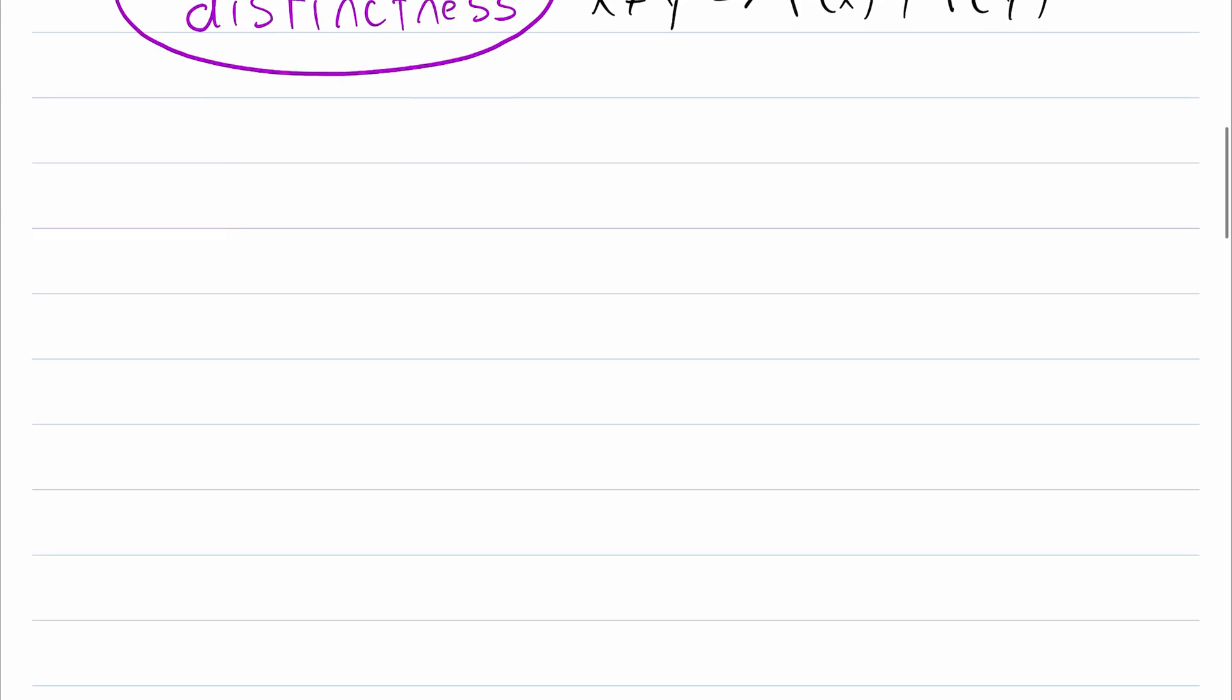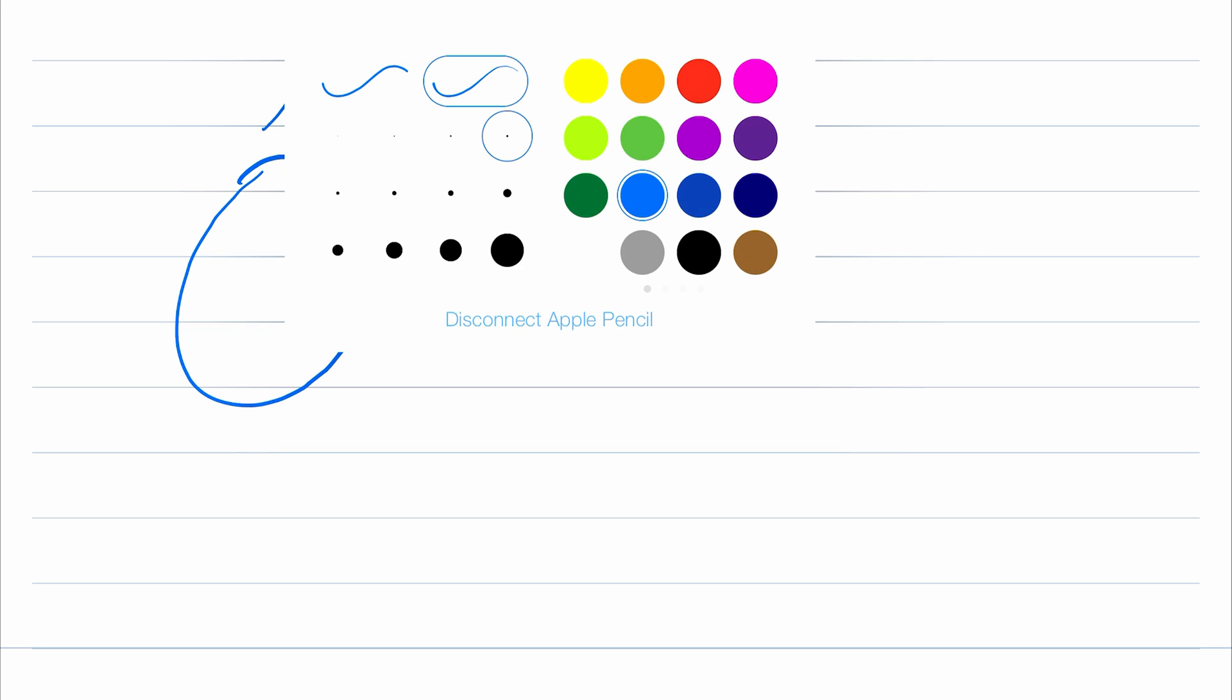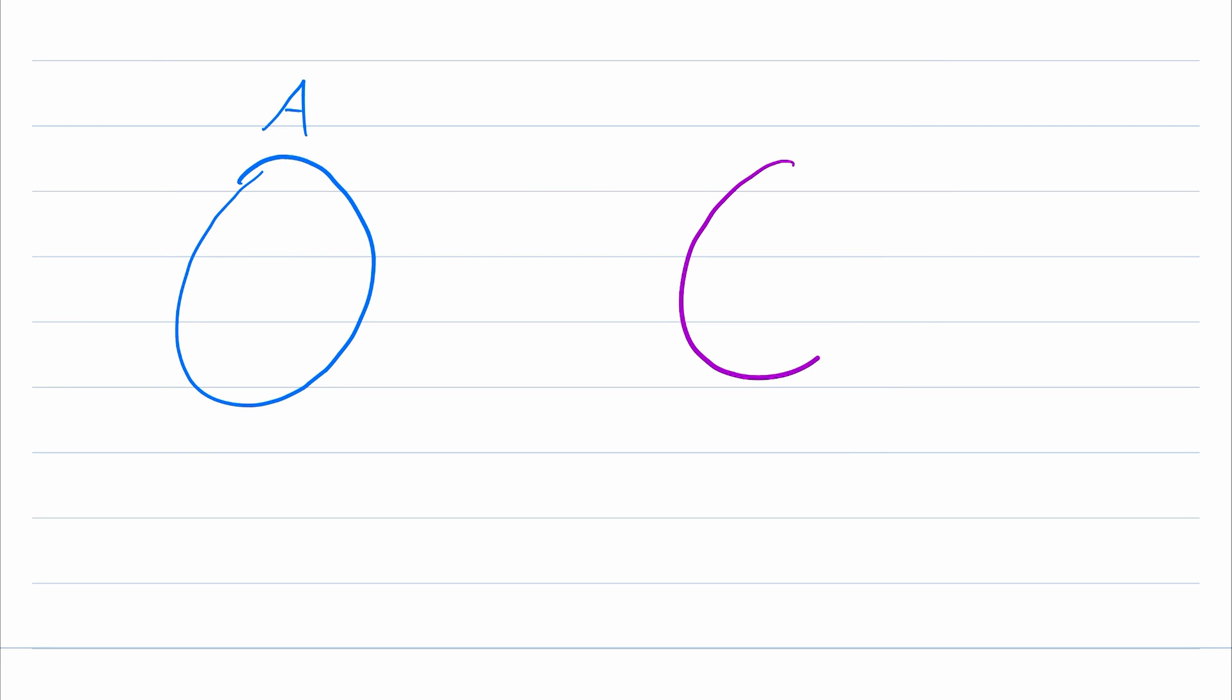Let's quickly take a more detailed look at a diagram to get a better idea of injections. Let's say this set is A, the domain, and this set B over here is the codomain. We'll put a few elements in our codomain, and we'll put a few elements in our domain.